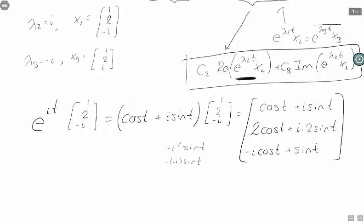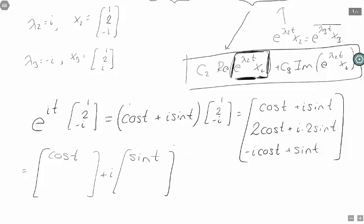Now that I've done some simplification on this piece here, e to the lambda 2 t times x2, what I need to do is separate out the real part from the imaginary part. And that just means I'm separating out the things with i's and the things without i's. So the things without i's: on the top I have cosine t, for the second row I have 2 times cosine t, and for the third row my sine t is the part without an i, and the i is multiplied by negative cosine of t. So this is my real part, and this is my imaginary part.